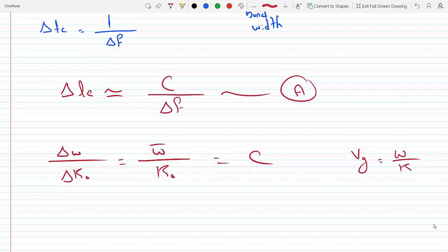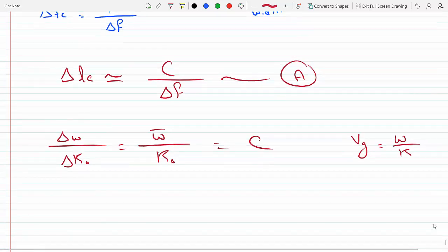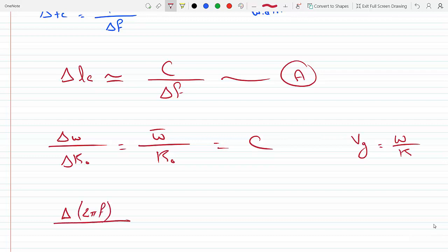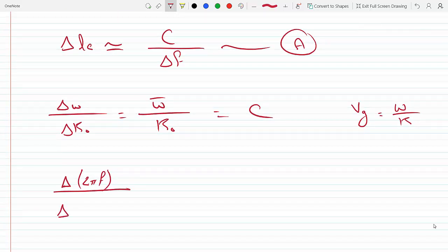Okay, now so what's this Δω? This is Δ(2πF) because that's what ω is, over Δk. Now we know k zero, the propagation number is 2π over λ₀, the wavelength in vacuum.